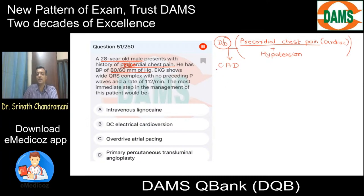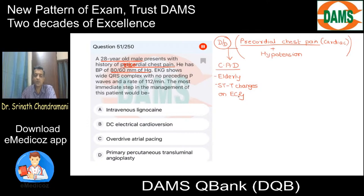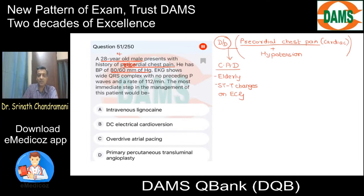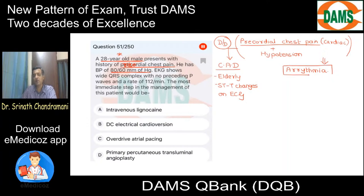However, coronary artery disease usually occurs in elderly persons and is associated with ST-T changes on the ECG. But since the patient in question is a young male, we must consider the other possibility that the patient is having a cardiac arrhythmia which has led to hypotension. You must consider the possibility of arrhythmia.